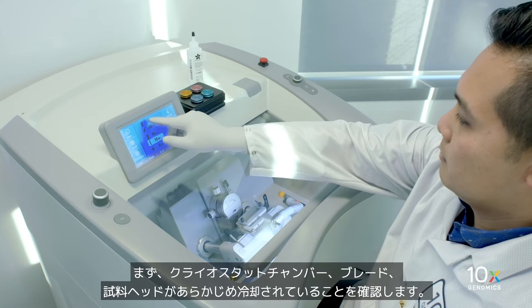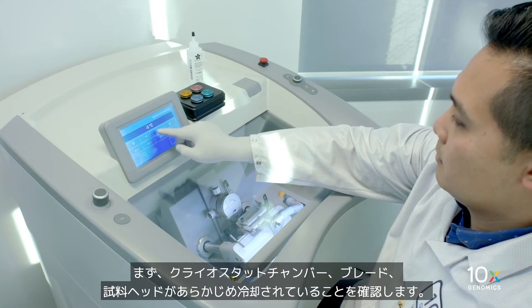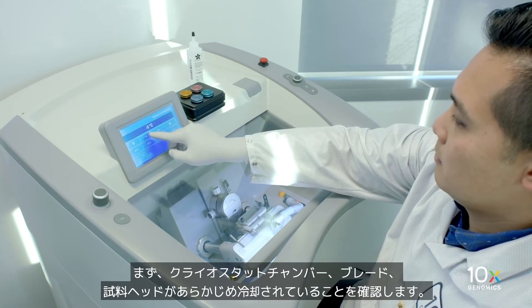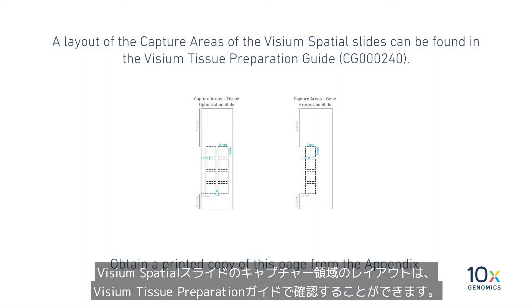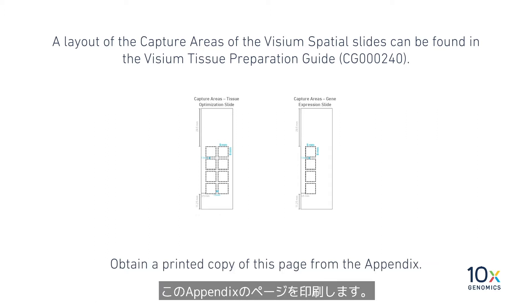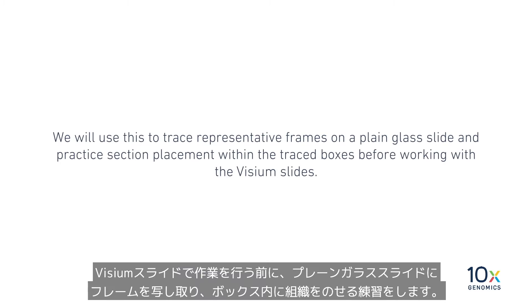We are ready to practice tissue placement on a plain glass slide. First, ensure the cryostat chamber, blade, and specimen head have been pre-cooled. A layout of the capture areas of the Visium spatial slide can be found in the Visium Tissue Preparation Guide. Obtain a printed copy of this page from the appendix. We will use this to trace representative frames on a plain glass slide and practice section placement within the trace boxes before working with the Visium slides.